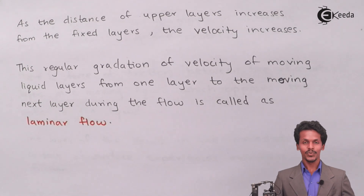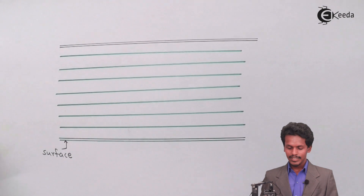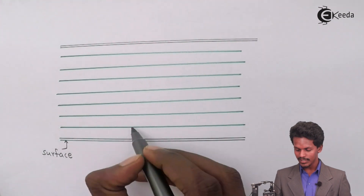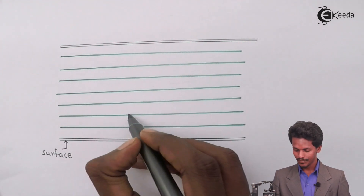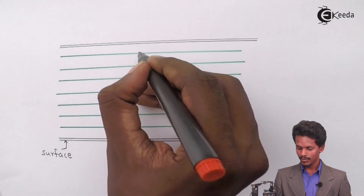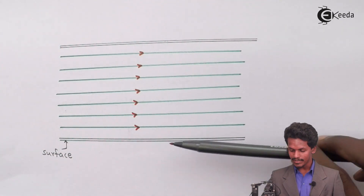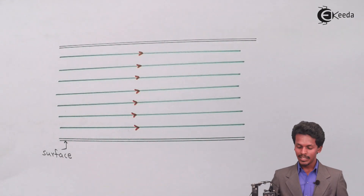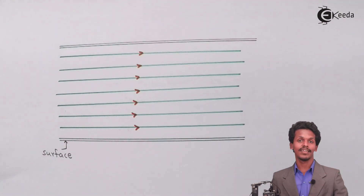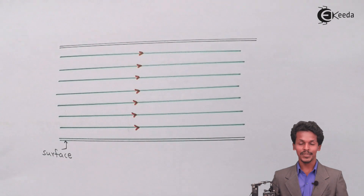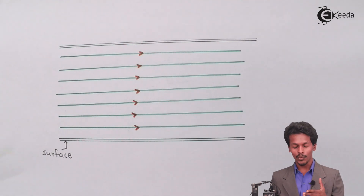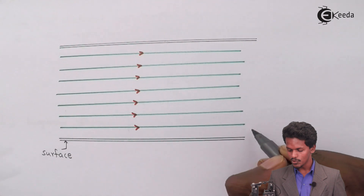Let me explain using this diagram. The black strips represent the surface, or you can consider it as a pipe through which the liquid flows. The liquid flows from left to right in multiple layers, present one by one in an adjacent manner. The first or immediate layer is on the surface, and it has velocity V.